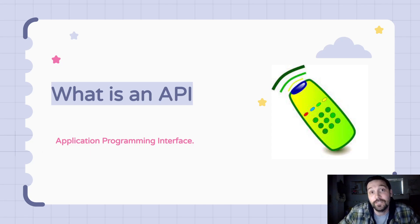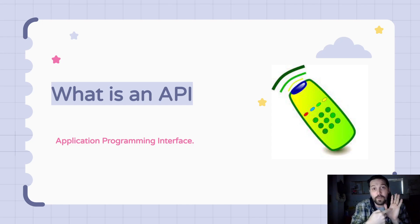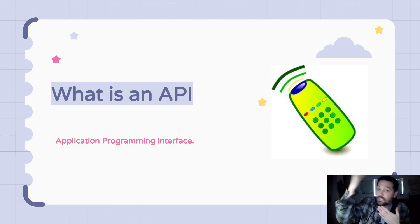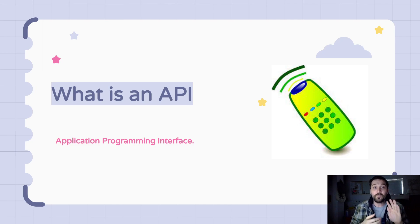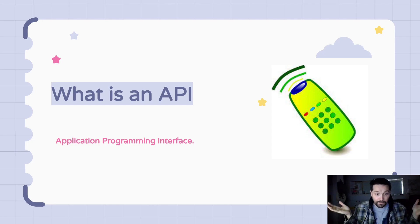Imagine you have a TV and you want to turn the volume up or down. You hit the button on the remote control — the volume up or volume down button — and then the TV turns the volume up or down depending on what button you push. The API works like that, but for different apps. If an app wants to talk to another app, it doesn't care how the other app works.